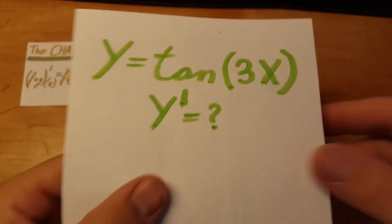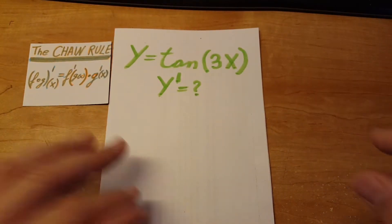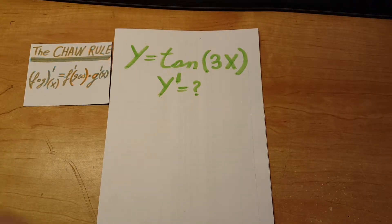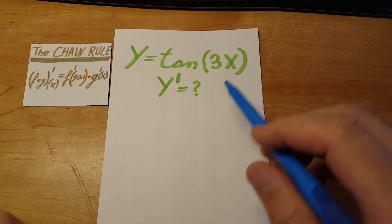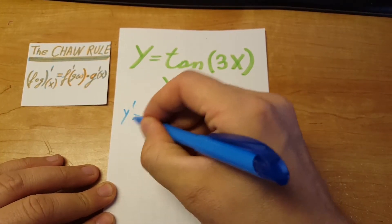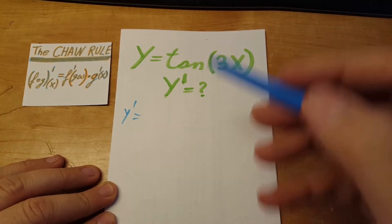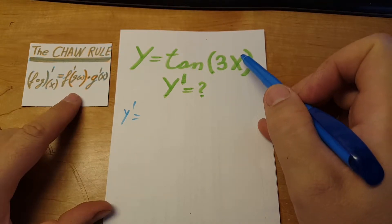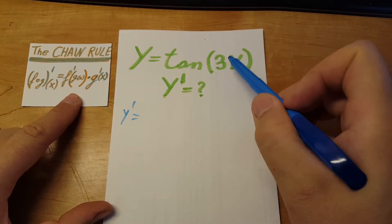Let's take the derivative of tangent of 3x. We're going to use the chain rule. So my derivative will be, just like chain rule says, we're going to leave the argument alone and take a derivative of just the tangent part.